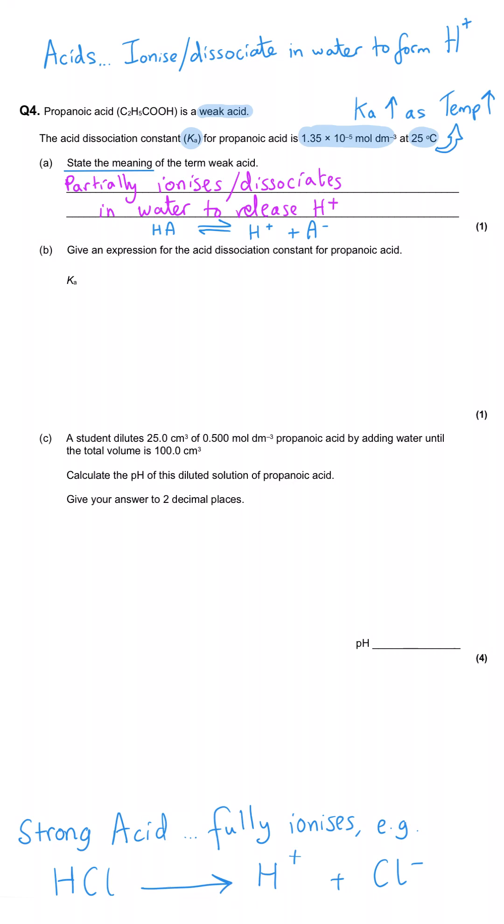In B, we are asked to give an expression for the acid dissociation constant for propanoic acid. We must always personalise our Ka expressions. There is a shorthand way of doing Ka expressions that is only for calculations.